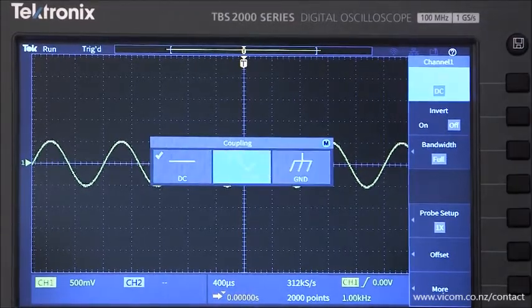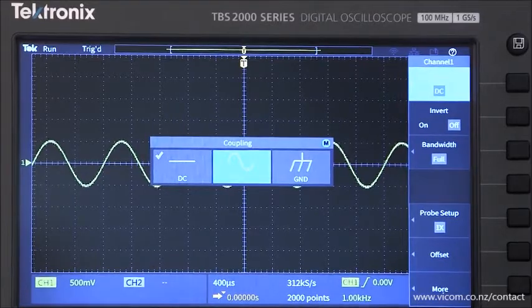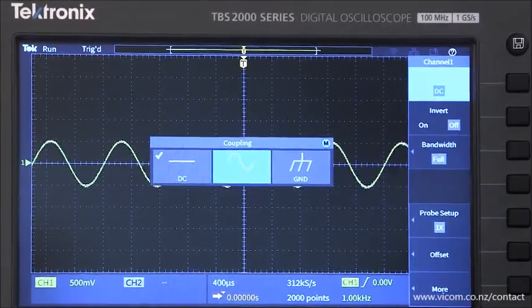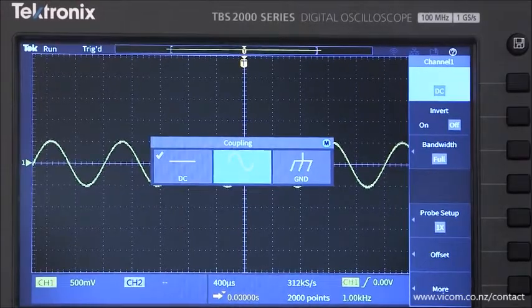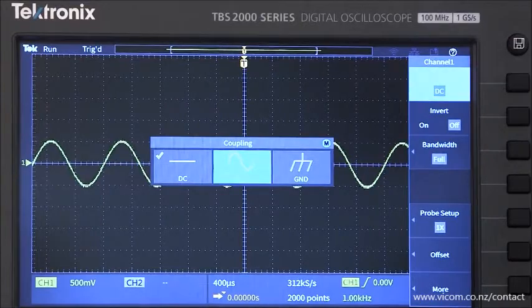AC coupling blocks any DC offset in the signal and passes only the AC component. This mode is really useful when you want to look at the small fluctuations riding on a DC offset, like ripple on a DC power supply.